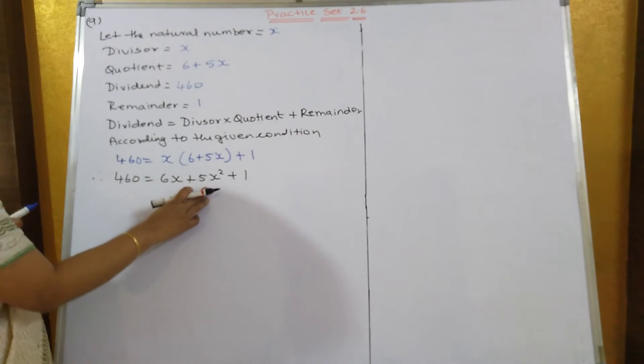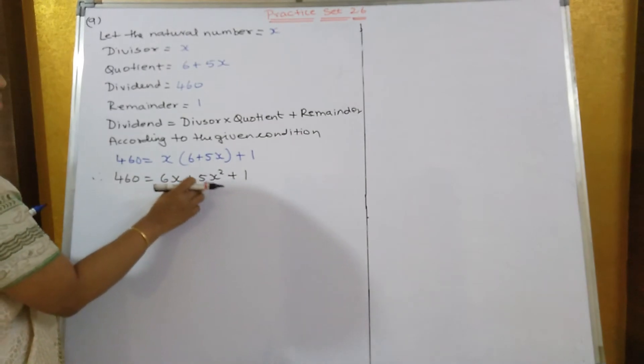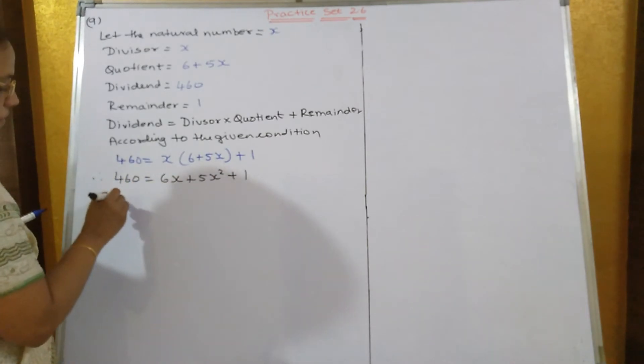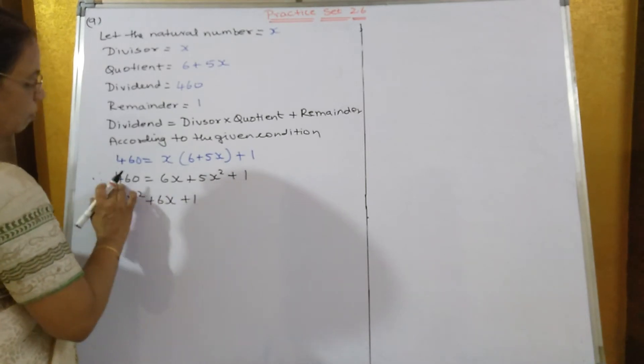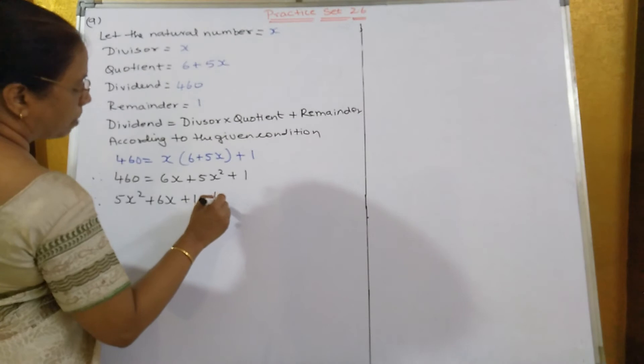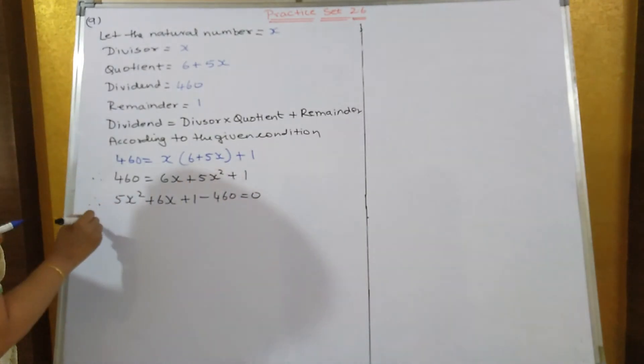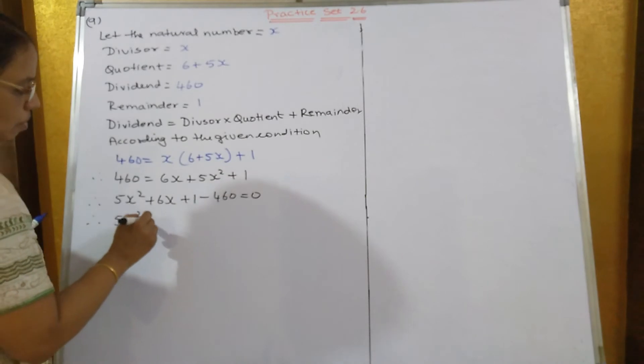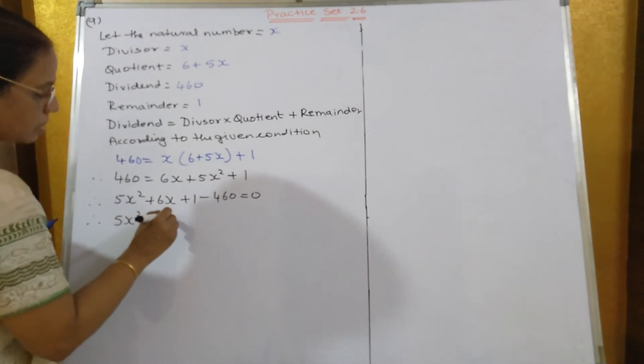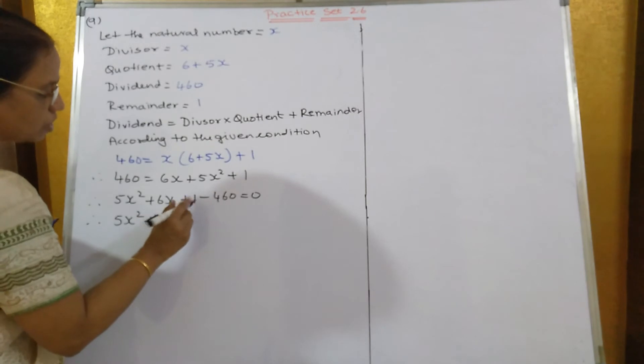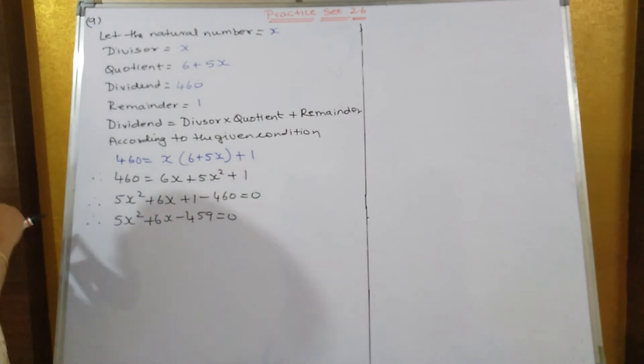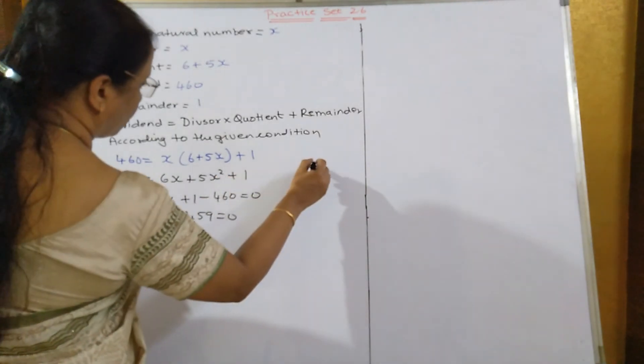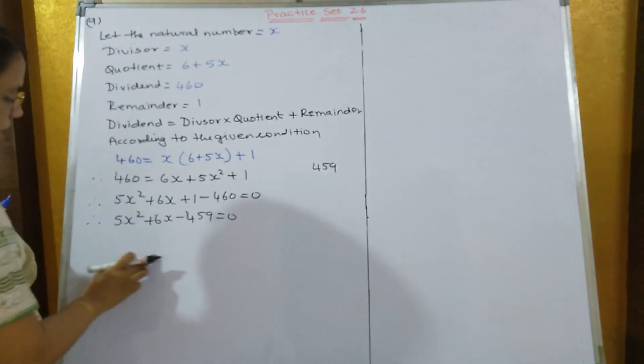Now, since this 5x square is positive, keep it that side and shift the other numbers. Therefore, 5x square plus 6x plus 1 and 460 will come on this side, will become minus 460 is equal to 0. Therefore, 5x square plus 6x minus 459 is equal to 0. Now, you have to find out the factors of 459 into 5.